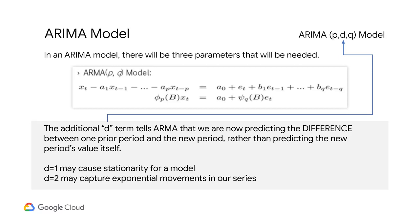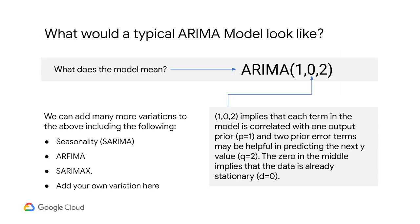Remember, D equals 1 may cause stationarity for a dataset which is not stationary before we build a model, while D equals 2 may capture exponential moments in our time series, but it's not frequently used. There are three questions to address in the ARIMA model. The first item is the I — how many differences, if any, are needed to make the data stationary. Let's assume the data is already stationary.